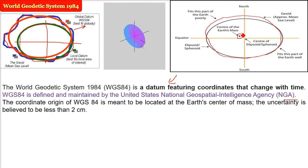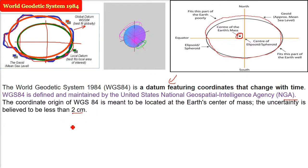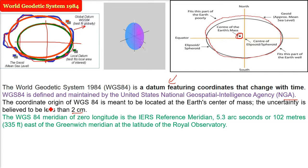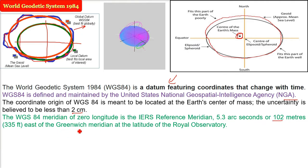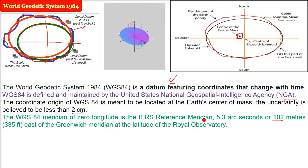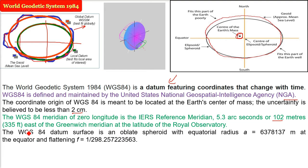The coordinate origin of WGS 84 is meant to be located at the center of mass of the earth, with an uncertainty believed to be less than two centimeters. WGS 84's meridian of zero longitude is just 102 meters to the east of the Greenwich Meridian, at the latitude of the Royal Observatory. So WGS 84 has a separate zero meridian, 102 meters east of Greenwich.